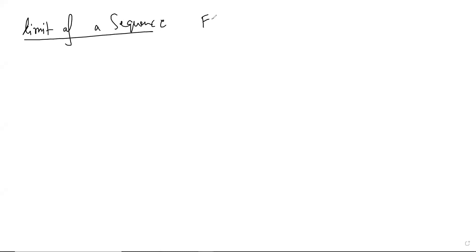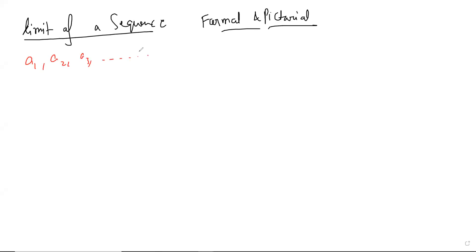Let's start. Yesterday we were trying to define the limit of a sequence. Let's give both the formal definition and the pictorial view of it, since that's in the notes. We have a sequence a1, a2, a3, and we are trying to study its eventual behavior. We say L is the limit of this sequence.